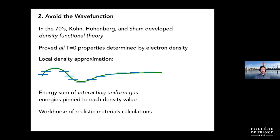A much more common approach is to say that the wave function is not an appropriate object for computation. The most successful alternative is density functional theory, laid down in the seventies and turned into a powerful computational tool. What you can prove is that simple properties derived from the wave function — basically just the electron density — are one-to-one with all other properties you'd want to know.